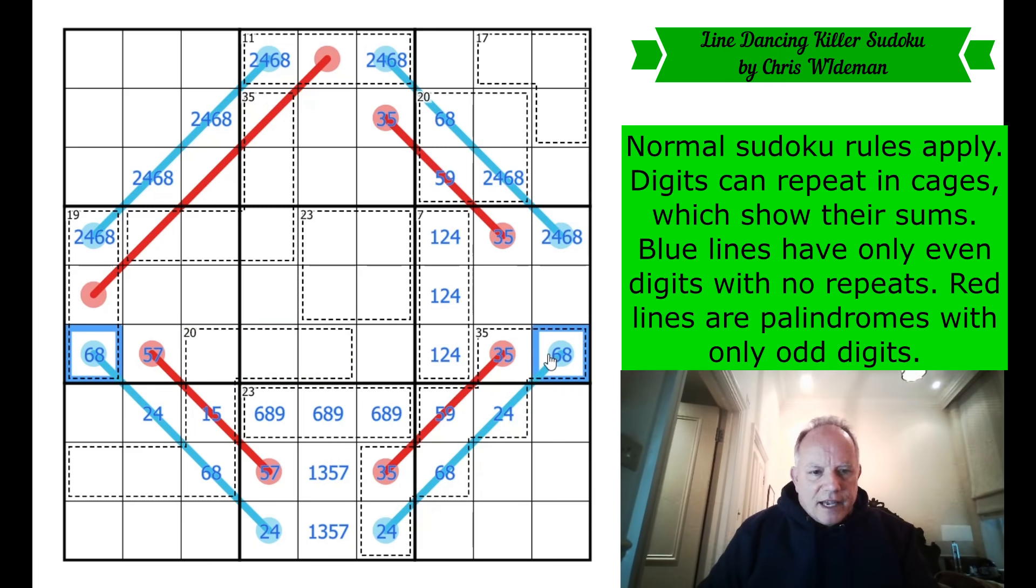We've got a 6, 8 pair there. If this was 1, 2, 3, we'd have 4 and 9. 2 and 4 are in there. So that's not 2 or 4. So we've now got a 6, 8 pair on this line as well. We're dancing up to that line. The other two on it are a 2, 4 pair.